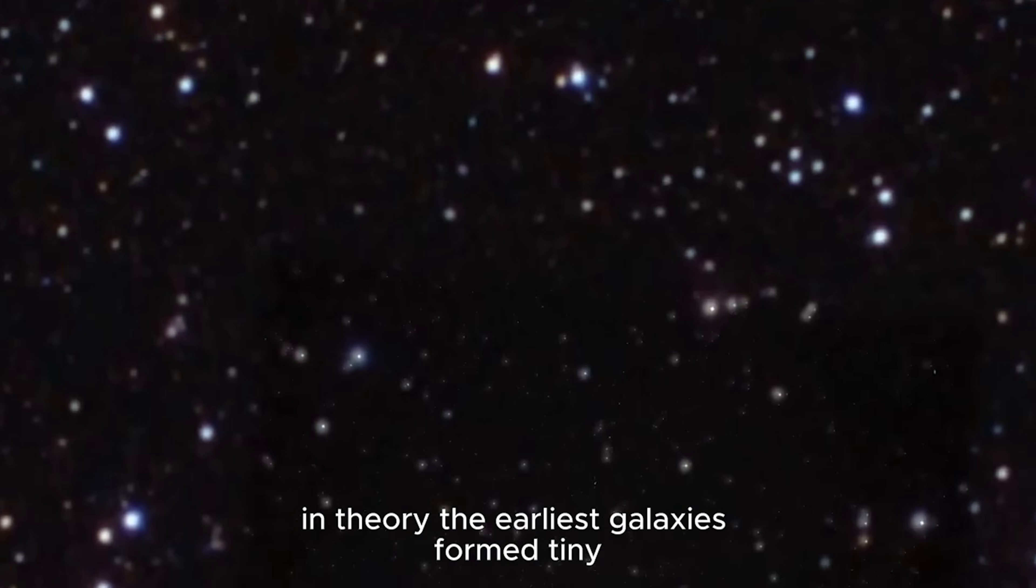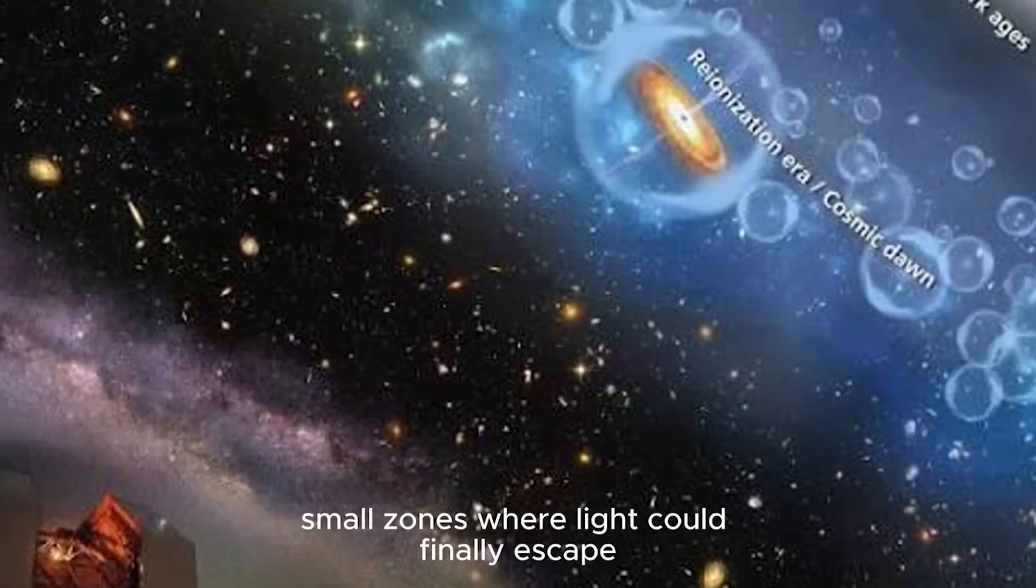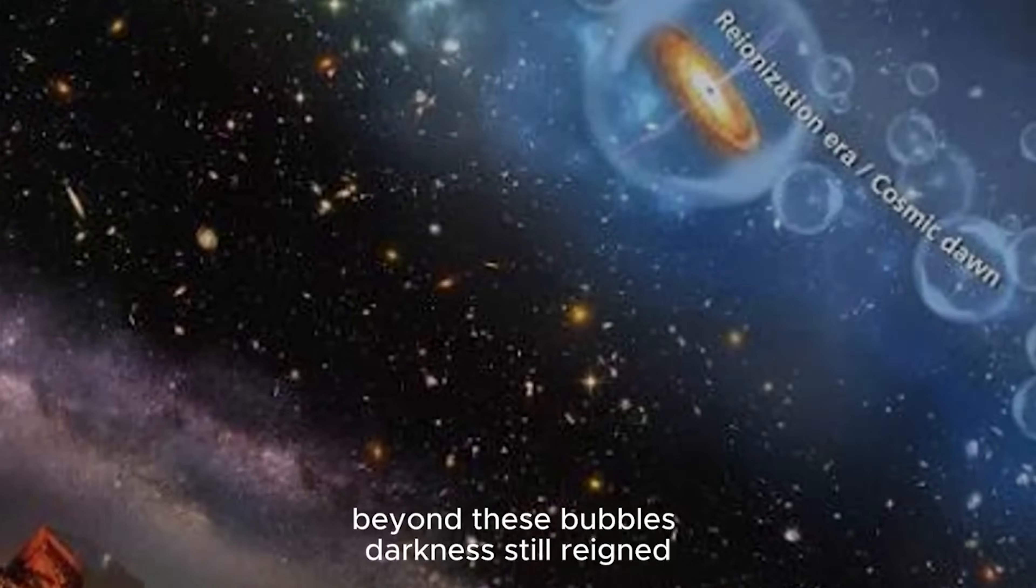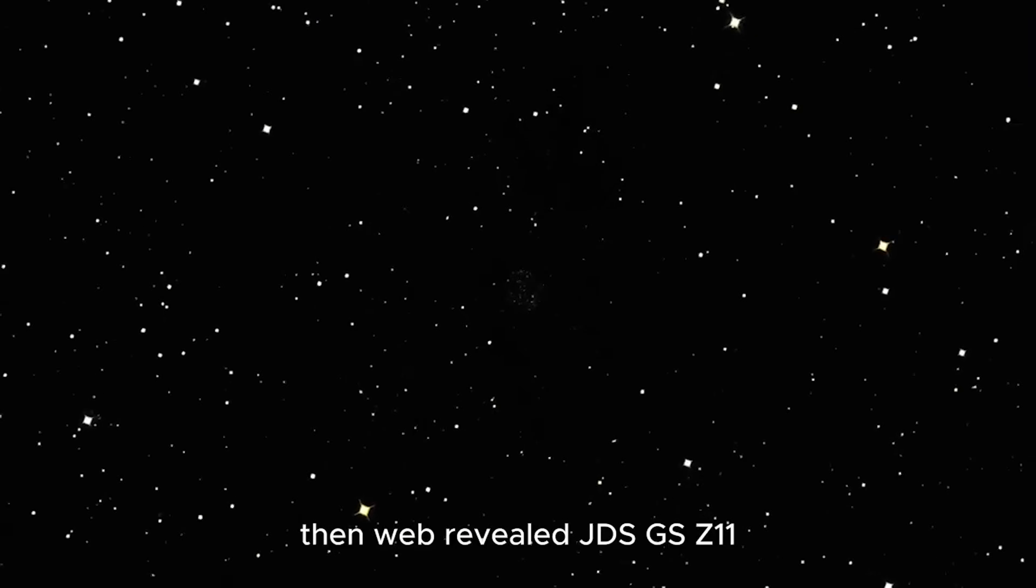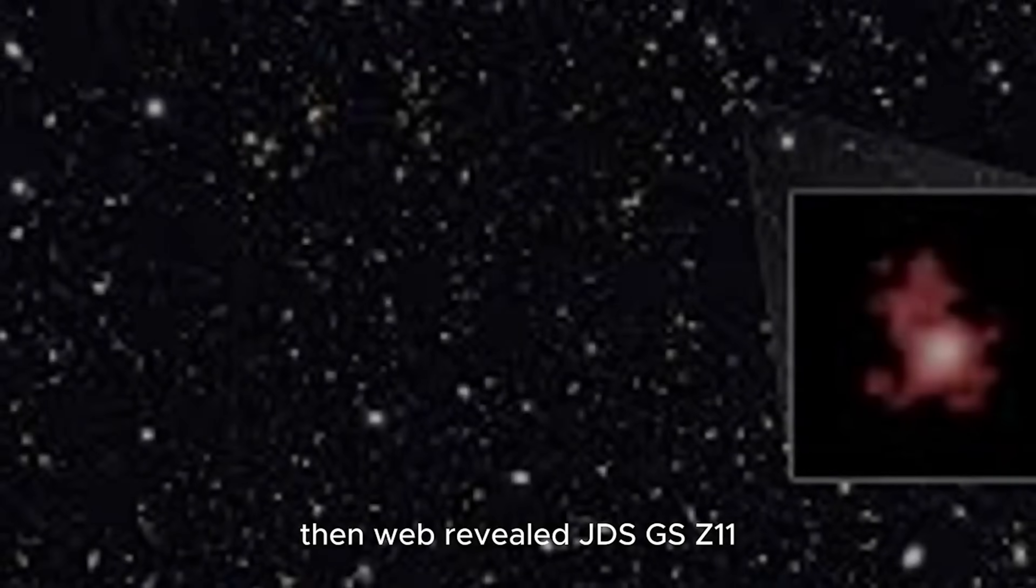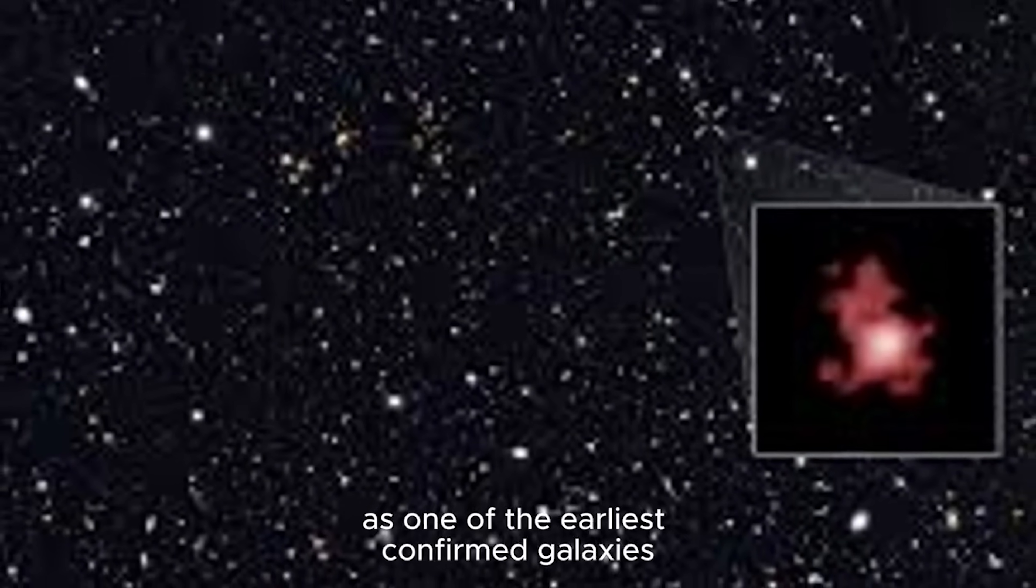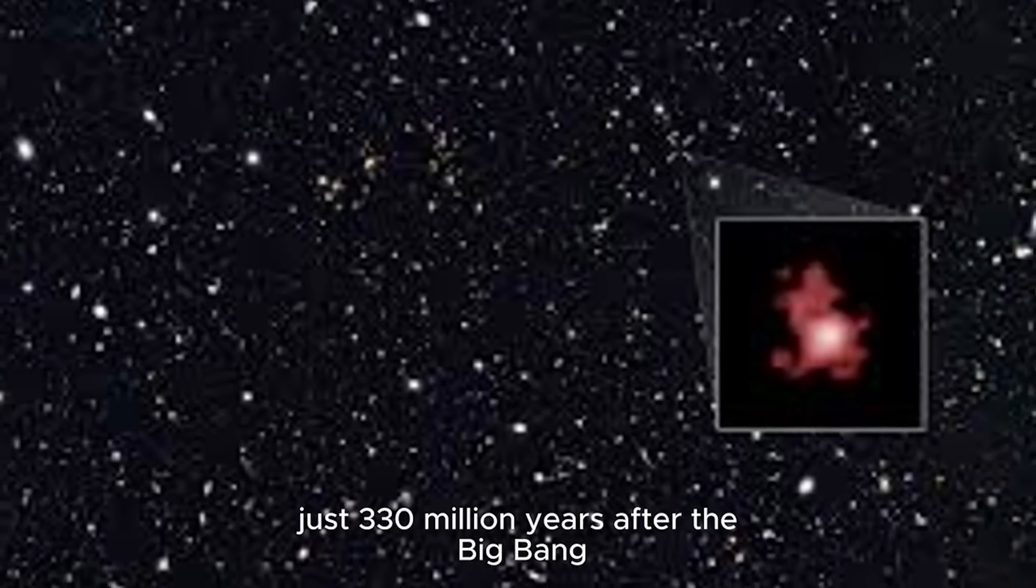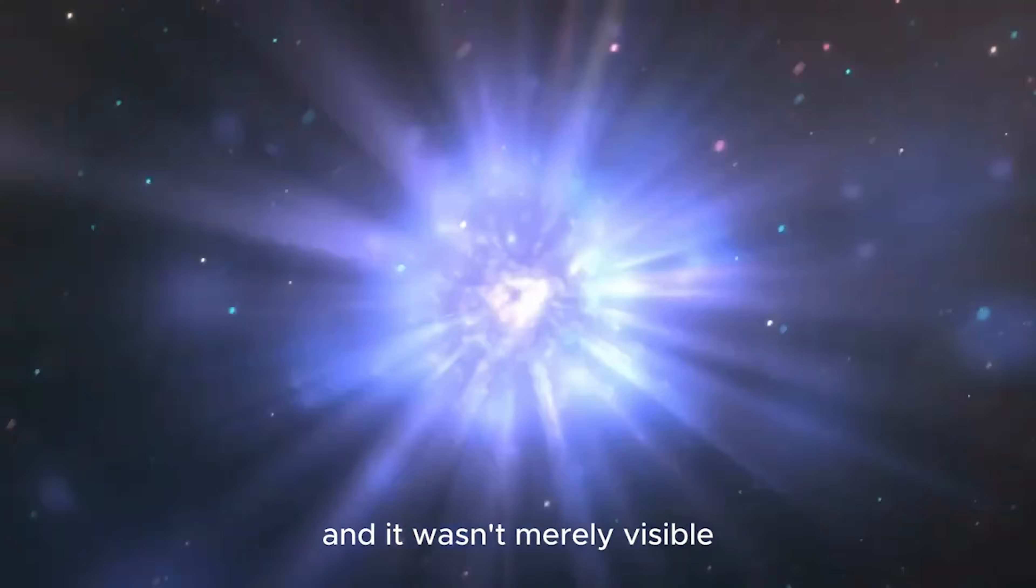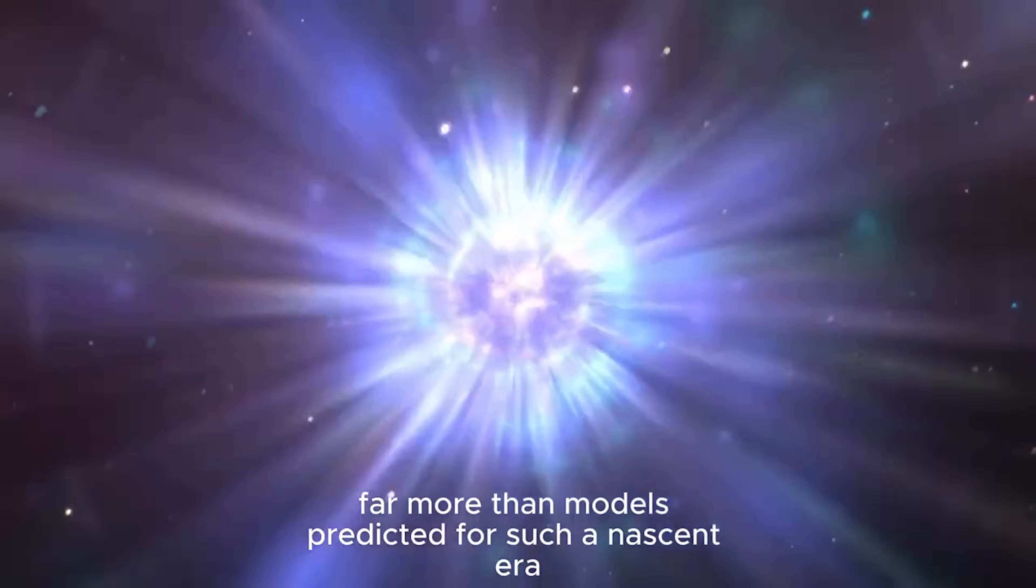In theory, the earliest galaxies formed tiny glowing bubbles within this fog, small zones where light could finally escape. Beyond these bubbles, darkness still reigned. At least that was the expectation. Then Webb revealed JDSGSZ-11, sometimes cited as one of the earliest confirmed galaxies, shining brightly just 330 million years after the Big Bang. And it wasn't merely visible. It flooded its surroundings with intense ultraviolet radiation, far more than models predicted for such a nascent era.